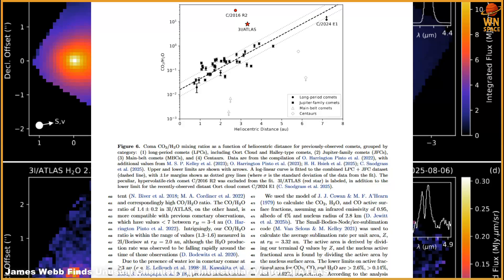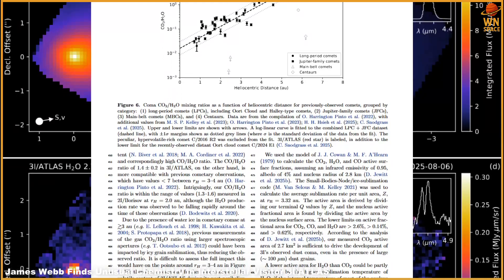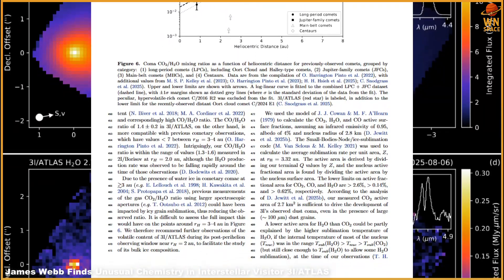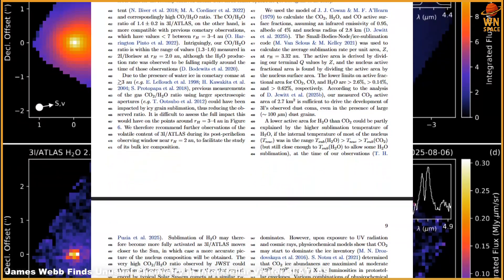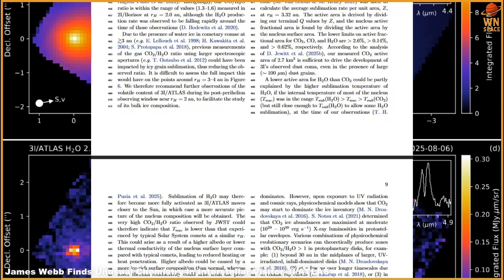As the comet approaches the Sun, it will soon become more difficult to observe, hidden behind solar glare from late September through early December.